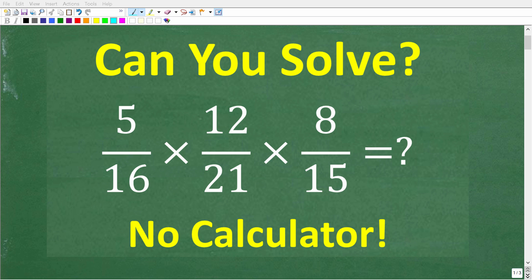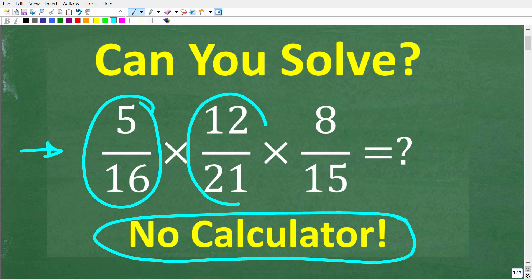All right, so let's see how much basic math you remember. What we want to do here is multiply all these fractions without using a calculator. We have 5 over 16 times 12 over 21 times 8 over 15. So once again, no calculators, but if you think you know the answer, put that into the comment section.